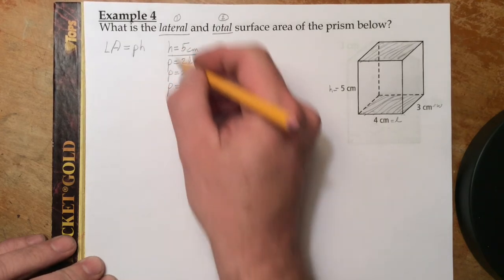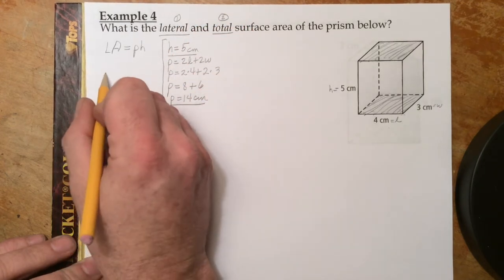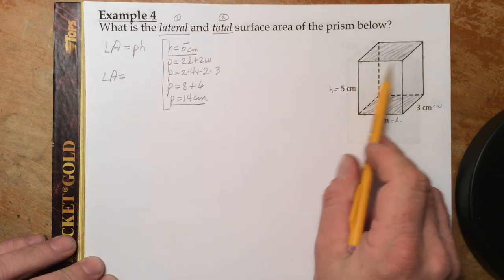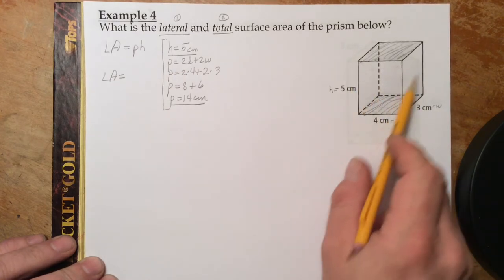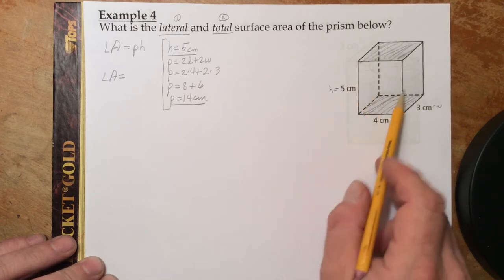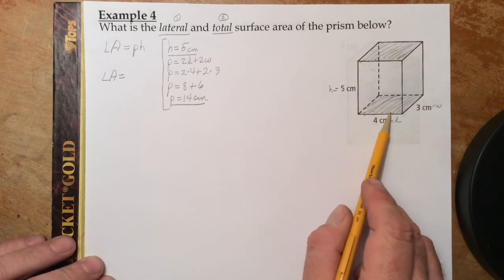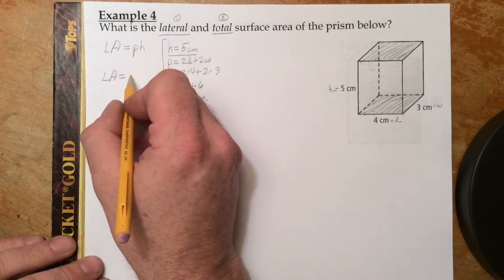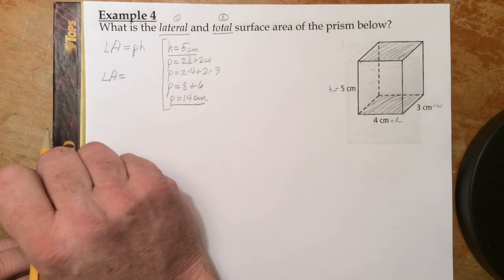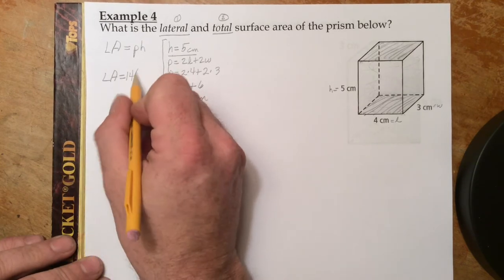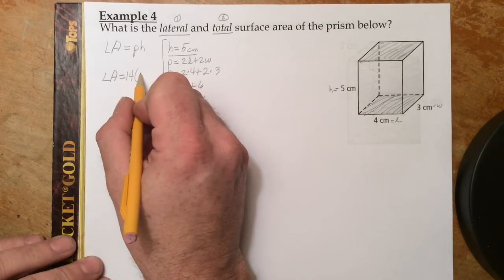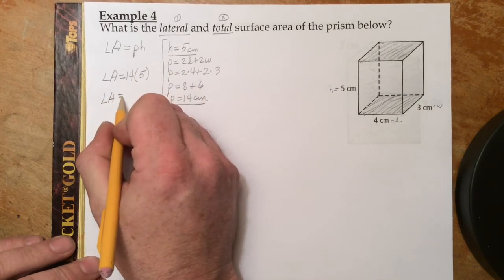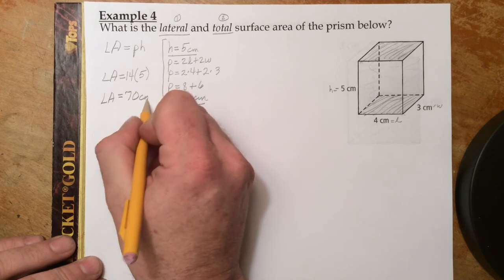Now we've got both dimensions. The lateral area is only the area of all the side faces — not the two bases. We get P = 14 cm times H = 5 cm, so our lateral surface area is 14 × 5 = 70 square centimeters.